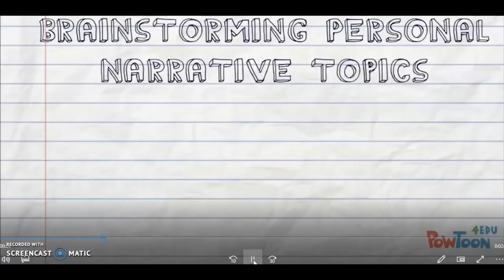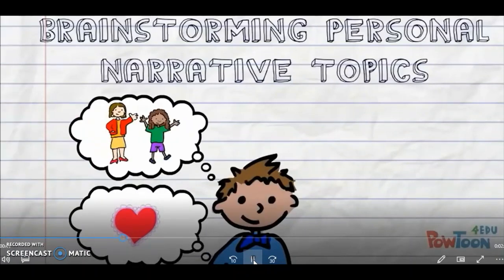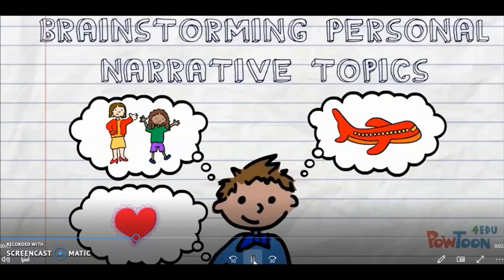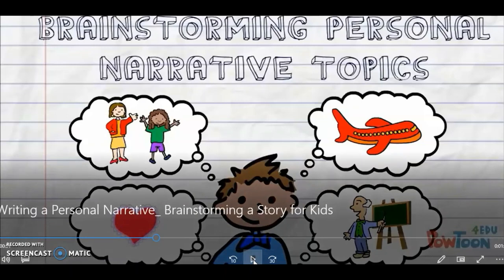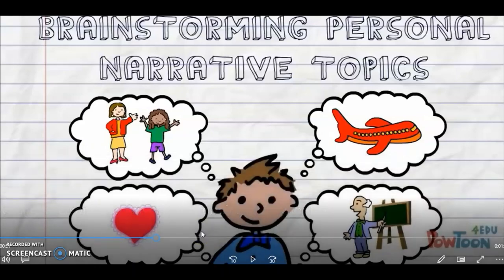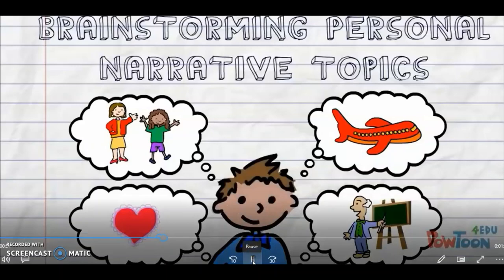When you brainstorm personal narrative topics, you can think about good memories — things that have happened to you, fun things you've done with family or friends, trips you have taken, special places you have visited, activities you have done at school, or anything else that has happened to you in your life.